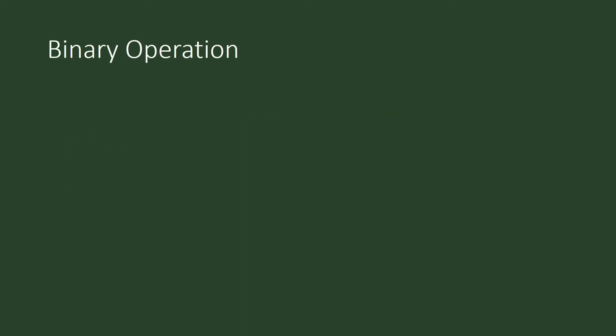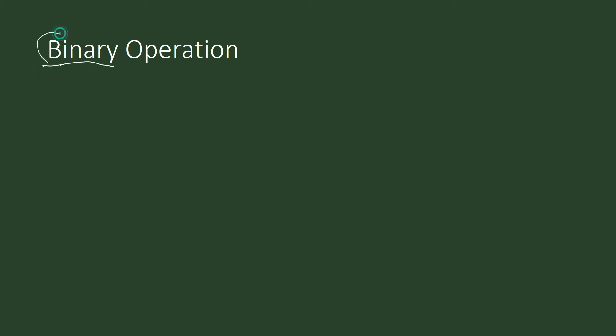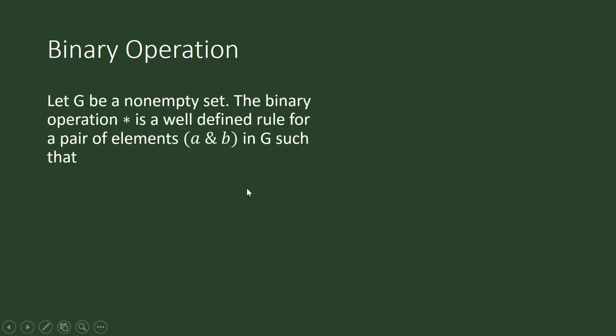Binary operation — these two words are not entirely new to you, but put together it may be the first time you see them combined. Binary has to do with things composed of two things; the prefix 'bi' indicates two. The operation part is comparable to your understanding of basic mathematical operations: addition, subtraction, multiplication, or division.